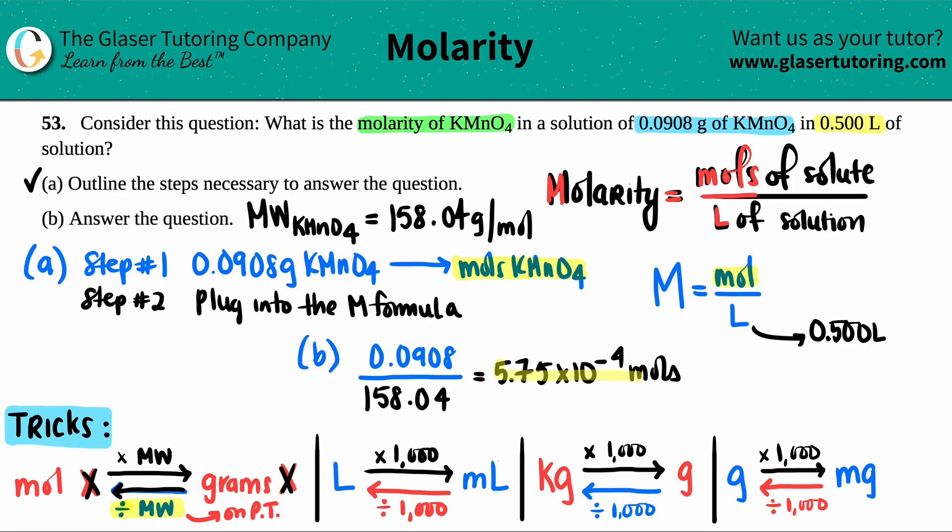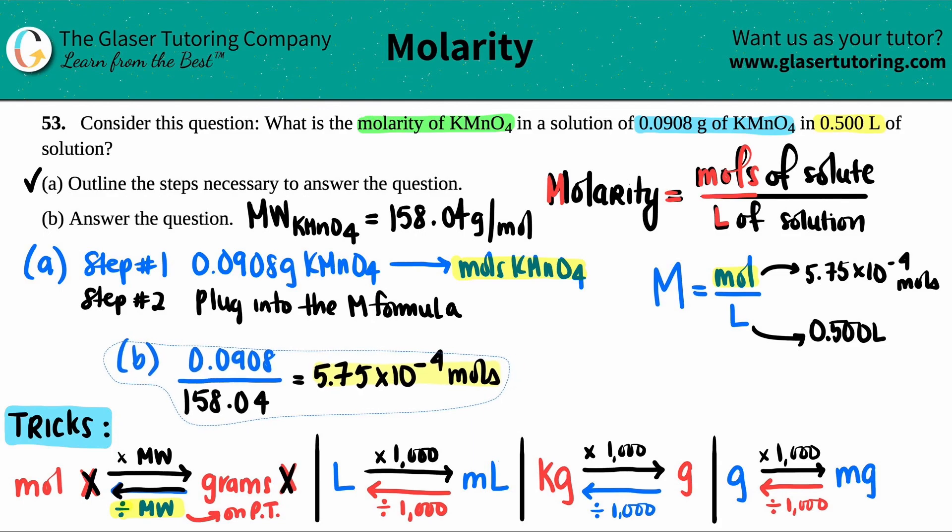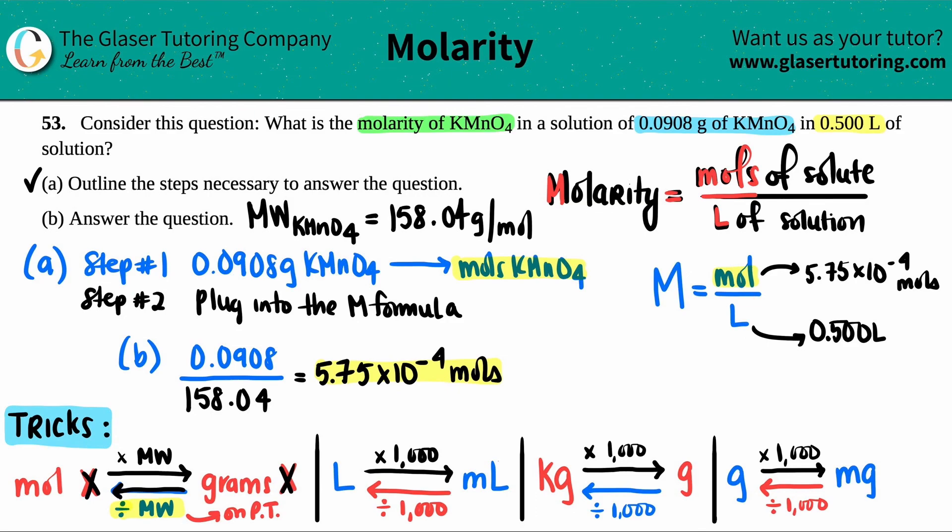Okay, so we now found the mole value that we needed to use the formula. This number is now 5.75 times 10 to the negative fourth, and now we can finally just divide. Using this formula, moles divided by liters, capital M molarity equals 5.75 times 10 to the negative fourth, and that's all divided by the 0.500.